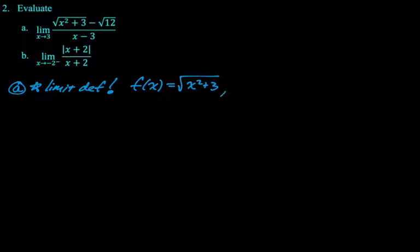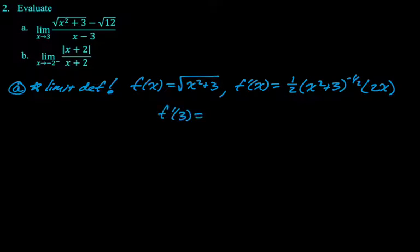So I'm going to find f prime using the chain rule. So f prime, bring down the one half, and then thing to the negative one half times the derivative of the thing. The derivative of the thing is 2x. And now I need to find f prime of 3. So if I just plug 3 into that, you know, you could simplify it if you want to. I just need f prime of 3. So the value of that limit is 3 over root 12. That's the way I would want to do this problem.